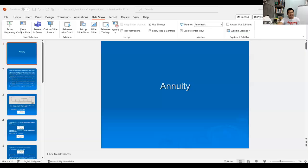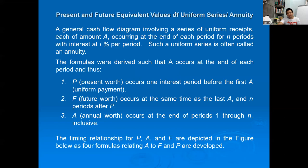Hello class, good day. Welcome to our subject Engineering Economy, Module 2. Today we will talk about annuity. This is the interesting part of engineering economy where we discuss cash flows. We'll be solving problems and I hope you'll find time to appreciate the beauty in the chaos. Let's define annuity: a cash flow diagram involving a series of uniform receipts, each amount A occurring at the end of each period for N periods with interest rate I. This uniform series is called an annuity.